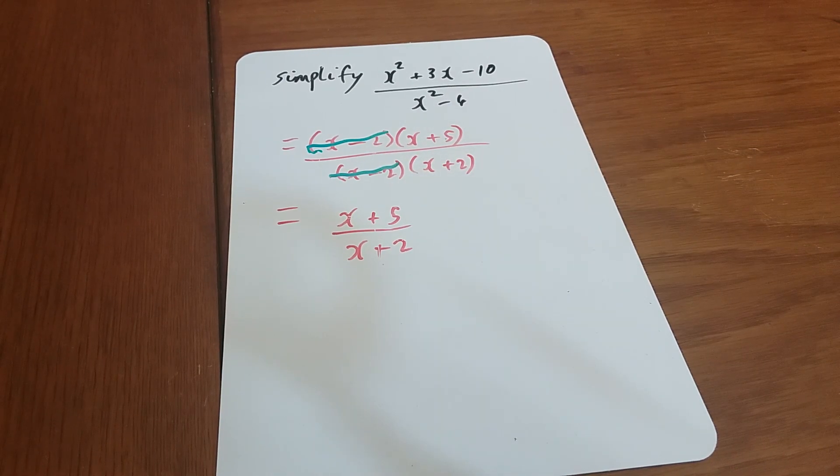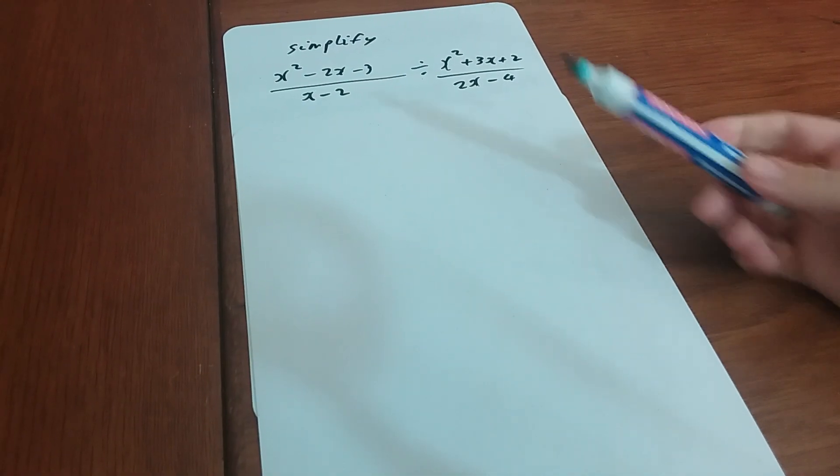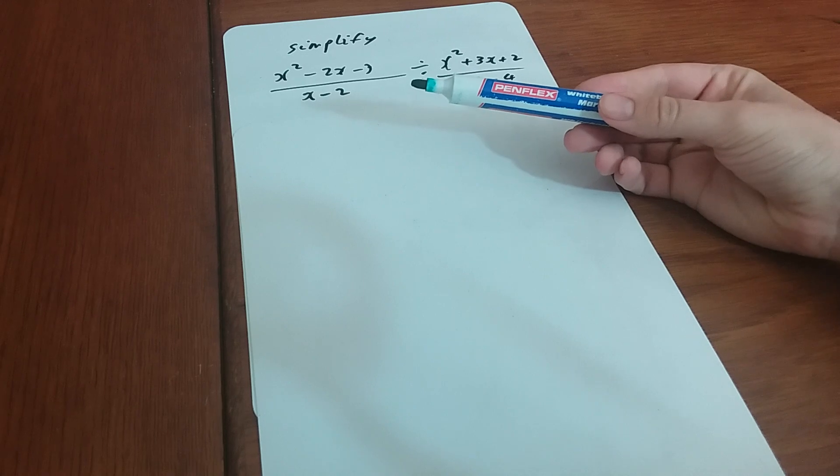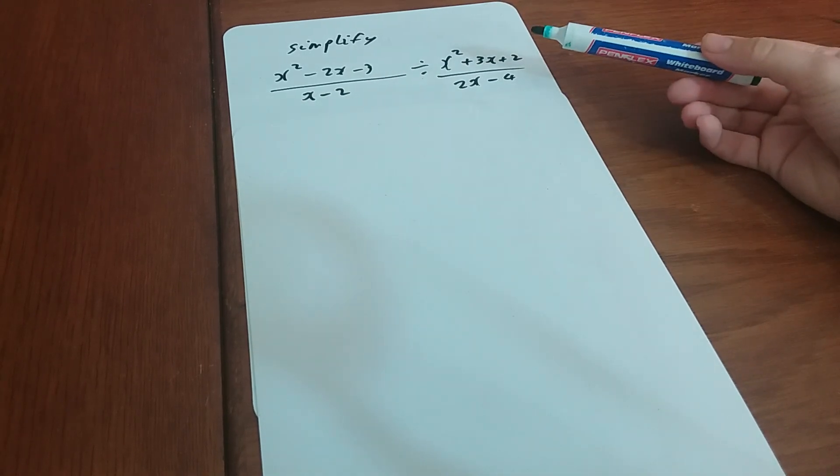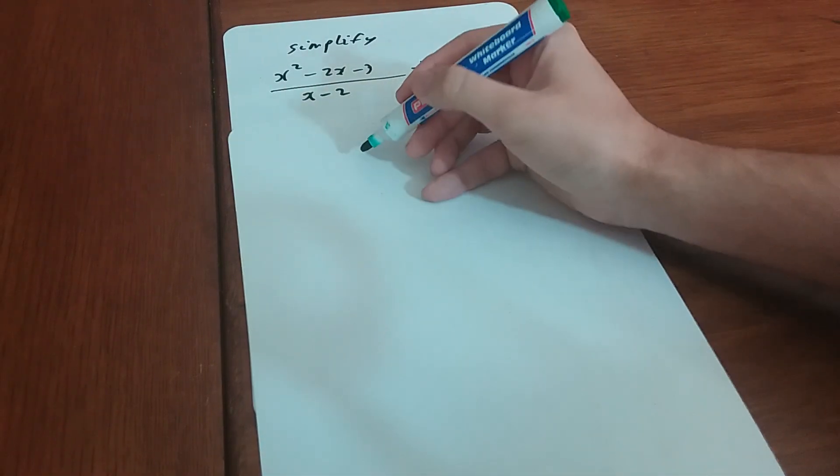Here's a slightly more complicated one. So on this one here we've got a quadratic over a linear thing divided by a quadratic over a linear thing. Now just as a quick reminder from a rule from GCSE: